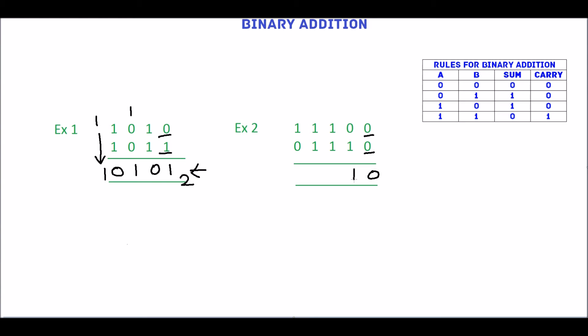Next add 1 and 1. Sum is 0. Carry is 1. 1 plus 1 plus 1 is 3 in decimal which is equivalent of 11 in binary. So sum is 1. Carry is 1.